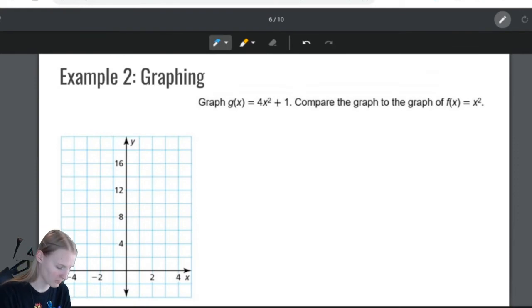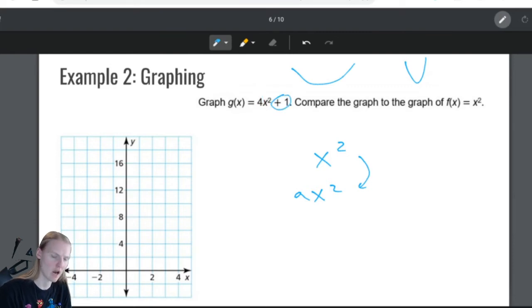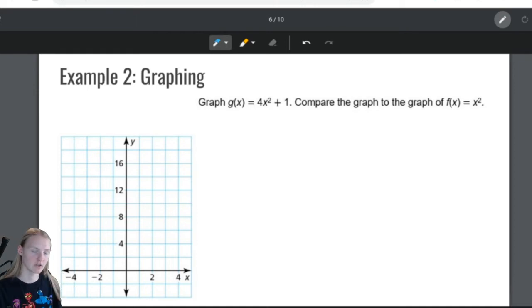Second example. Last example for today. Graph this: g of x equals 4x squared plus 1. What do you think, before we even graph it, what do you think this is going to look like? Remember, how did the graph change when I went from x squared to ax squared? Remember, the graph either got wider or it got skinnier. So, if we have a 4 in front of here, do you think it's going to get wider or do you think it's going to get skinnier? And, since we have this plus 1 here, I know that that either moves it up or down. I want you to make a guess before we even start.